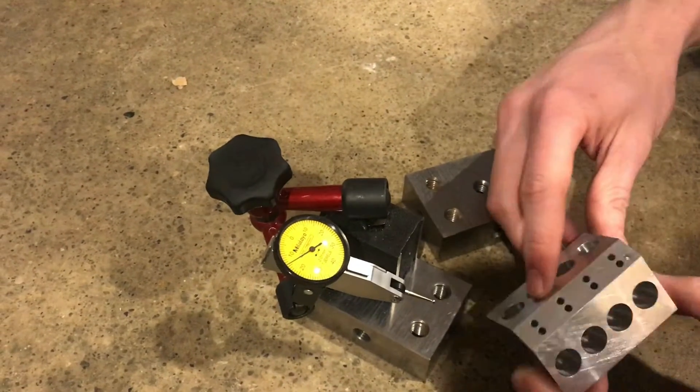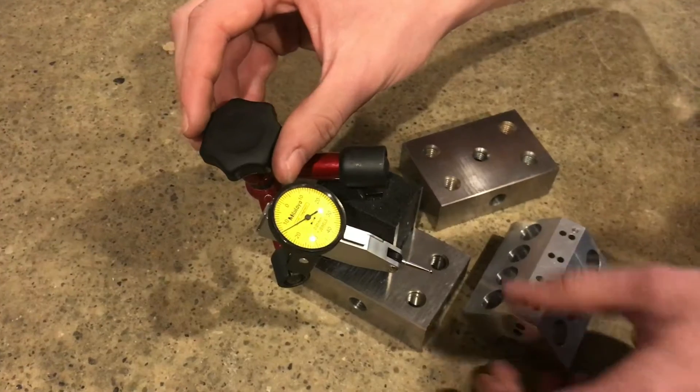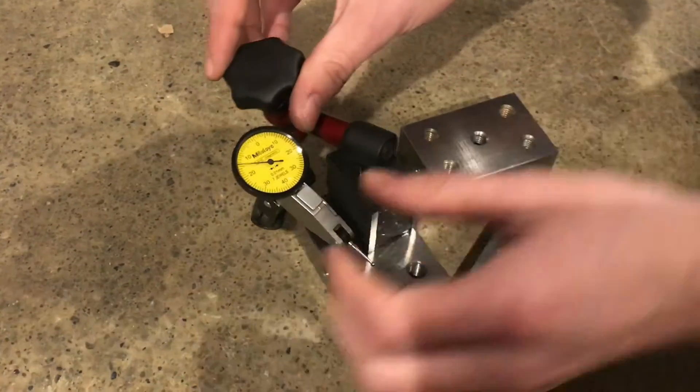Perpendicularity is a little bit more complicated to check, but it's still a similar concept. I'm going to leave my indicator on this 1-2-3 block.